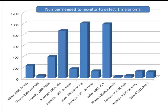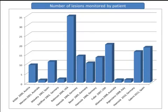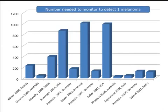The number of lesions needed to monitor to detect one melanoma is low in studies that monitored only a small number of lesions per patient — in other words, short-term monitoring is more effective than long-term monitoring. By contrast, Robinson and Fuller in the US monitored a large number of lesions per patient — Robinson monitored more than 30 lesions per patient — and accordingly needed to monitor many more lesions to detect one melanoma. Long-term monitoring is not as efficient as short-term monitoring.